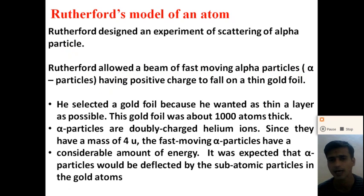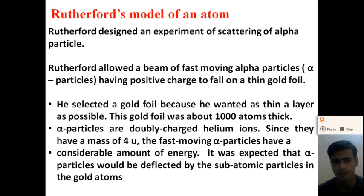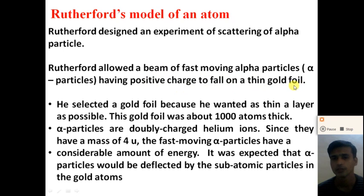What are alpha particles? Alpha particles are nothing but positive helium ions, which have two protons and two electrons. The mass of helium is four times the mass of hydrogen. Rutherford allowed a beam of fast-moving alpha particles having a positive charge to fall on a thin golden foil.